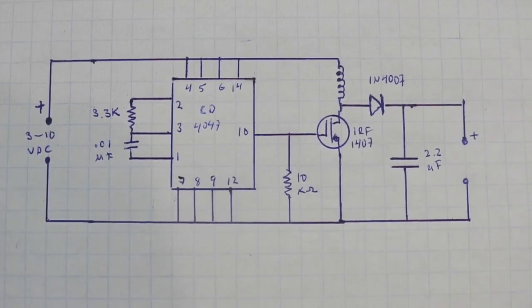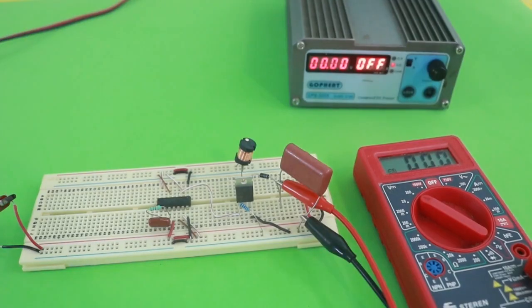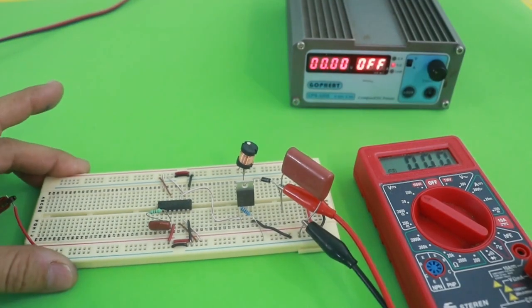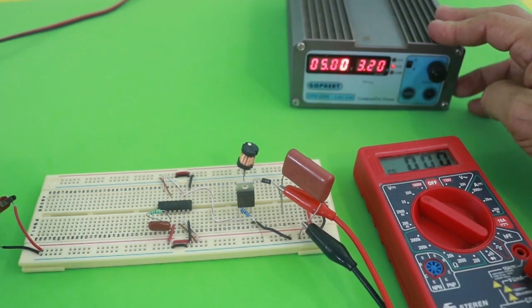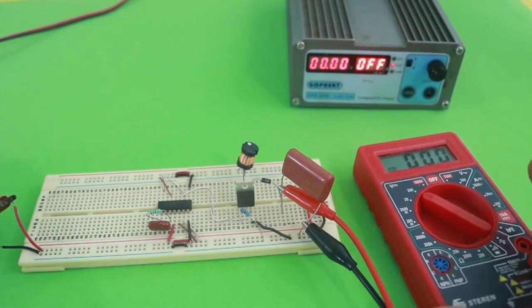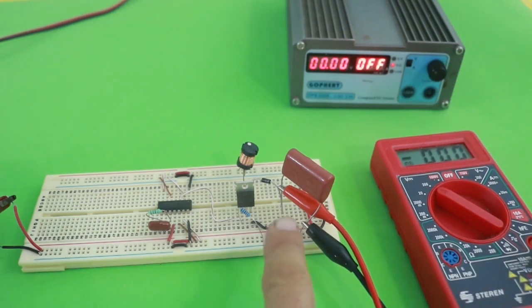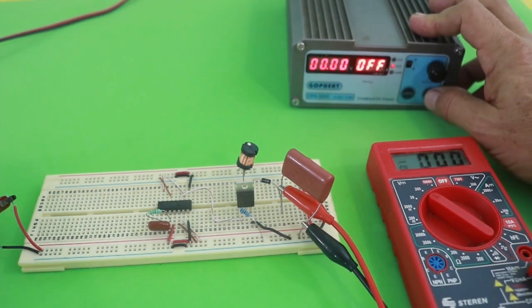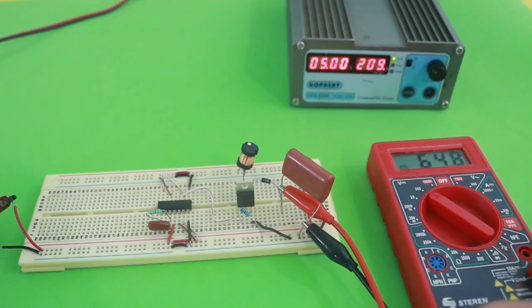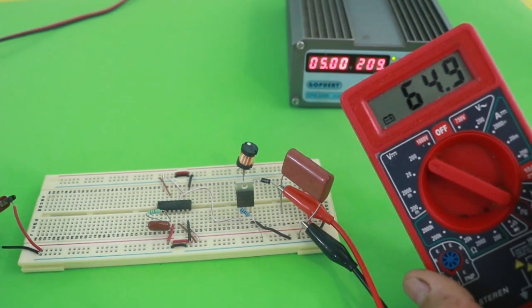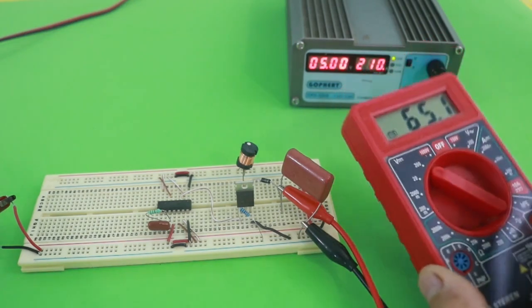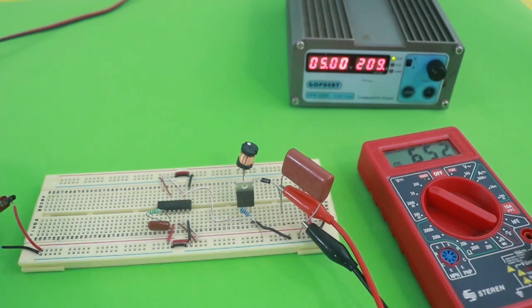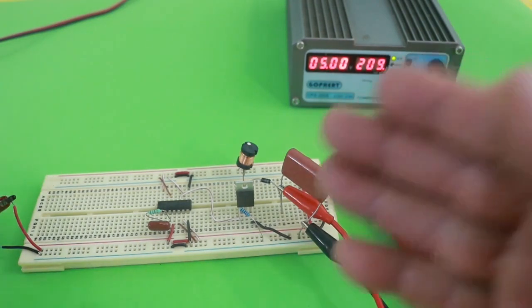Let's now see the circuit working. Okay, the circuit is now connected to the variable power supply. I will use 5 volts at the input and the multimeter is connected at the output at the capacitor terminals. So let's turn on the power supply and we can see that we have at the output 65 volts. That is, we have a substantial increase of voltage from the input to the output.